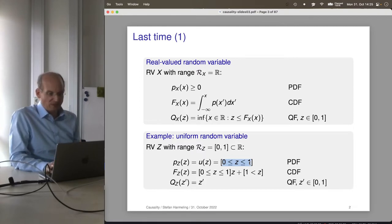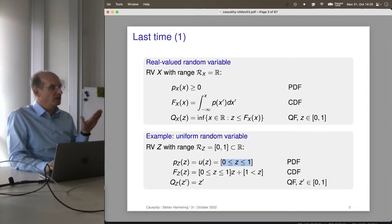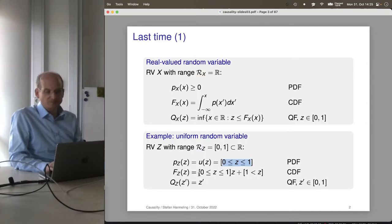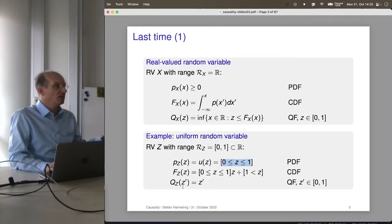We could also write the CDF of a uniform distribution using Iverson brackets: in the interval between 0 and 1 we have the linear function, if larger we're constant 1, and if smaller we're 0. We can also calculate the inverse: for the uniform distribution it's just the identity function — just z prime. So far so good.